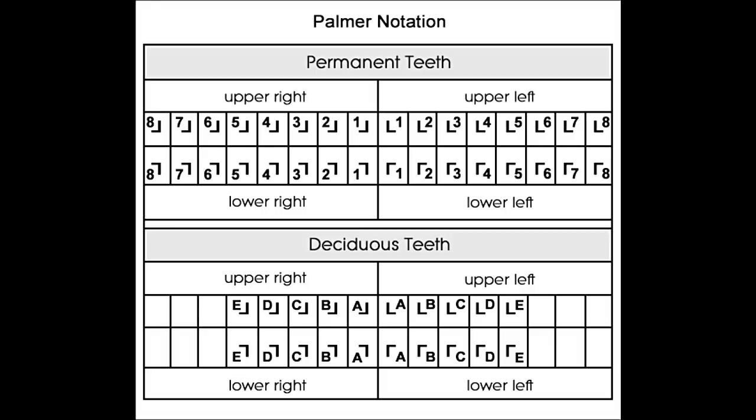The Fédération Dentaire Internationale (FDI) Numbering System is a two-digit system used worldwide. For permanent or adult teeth, the mouth is divided into quadrants numbered 1 to 4 in the clockwise direction, starting from the upper right — the right side of the upper jaw as seen by the dentist. Every tooth is numbered based on the quadrant and its position. So in the first quadrant (right side of the upper jaw), the central incisor is numbered 11, the lateral incisor is numbered 12, and numbering continues till the third molar, numbered 18.